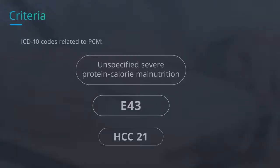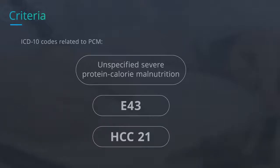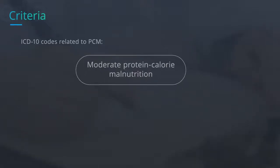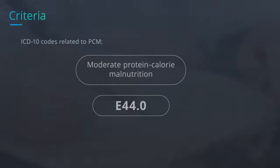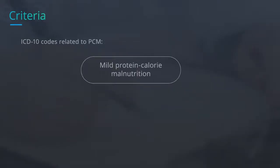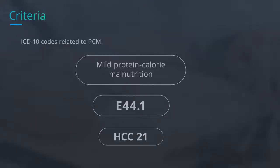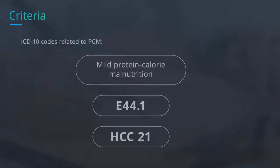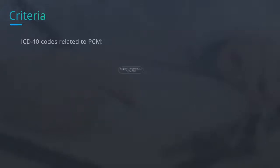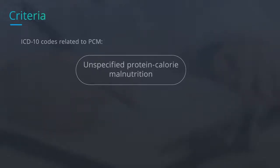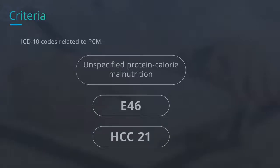The ICD-10 codes related to PCM are as follows: for unspecified severe protein calorie malnutrition, the code is E43 (HCC 21); for moderate protein calorie malnutrition, the code is E44.0 (HCC 21); for mild protein calorie malnutrition, the code is E44.1 (HCC 21); and for unspecified protein calorie malnutrition, the code is E46 (HCC 21).